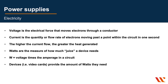Now let's look at some of the basics. Voltage is the electrical force — it moves electrons through a conductor, which is how you get electricity. Current is the quantity or flow of electrons moving past a point within the circuit in one second, and the higher the current flow, the greater the heat generated. Watts measure how much power a device needs — it's the voltage times the current in a circuit.